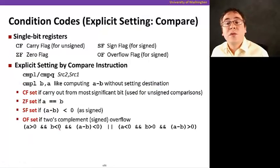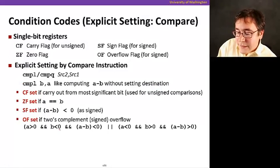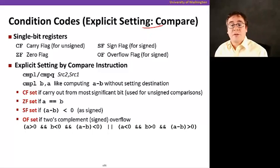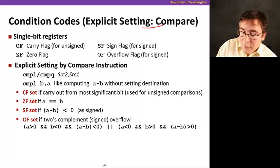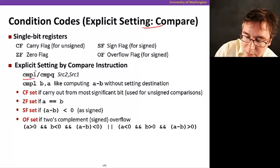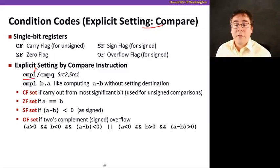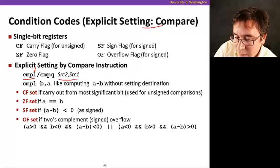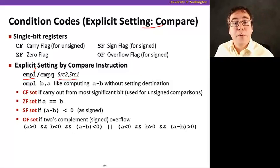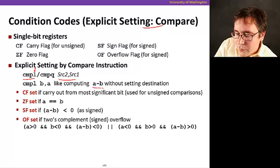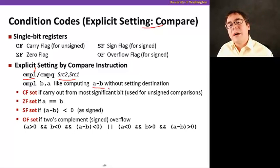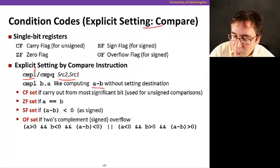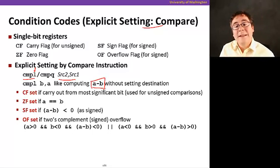The other way is to set the condition codes explicitly using compare instructions. For example, if you do compl, which compares a four-byte number, you pass two operands as parameters, source two and source one. It effectively computes A minus B but without setting the destination. It just computes this expression to set the condition codes appropriately.